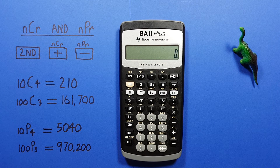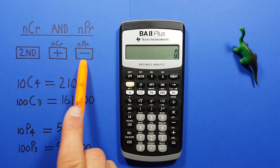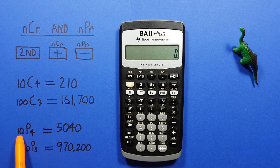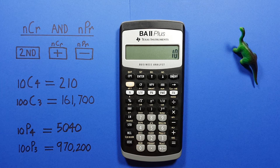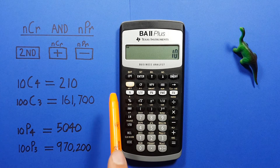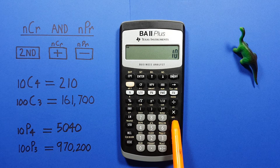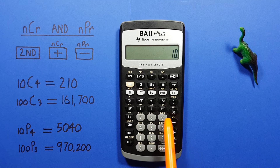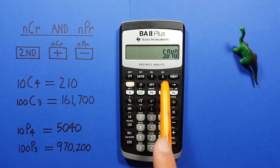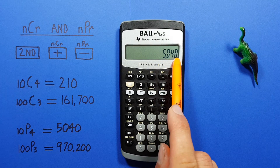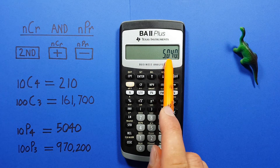If we want to find permutations, we do it the same way, except we use the second function of the subtraction key. So if we're given 10 choose 4 permutations, again we start by entering the 10, second function, and now the subtraction key with the second function permutation, and then 4, equals, and we see we get a result of 5040 possible permutations.